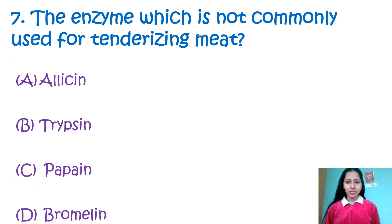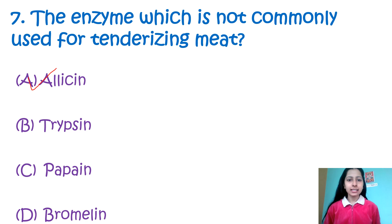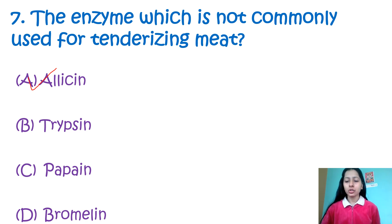Question 7: Which enzyme is NOT commonly used for tenderizing of meat? Option A: allicin, B: trypsin, C: papain, D: bromelain. The enzyme not used for meat tenderization is allicin — option A. Allicin is actually an organo-sulphur compound present in garlic. Whereas trypsin is an enzyme used to digest proteins, papain is obtained from papaya, and bromelain from pineapple. So the correct answer is allicin, option A.